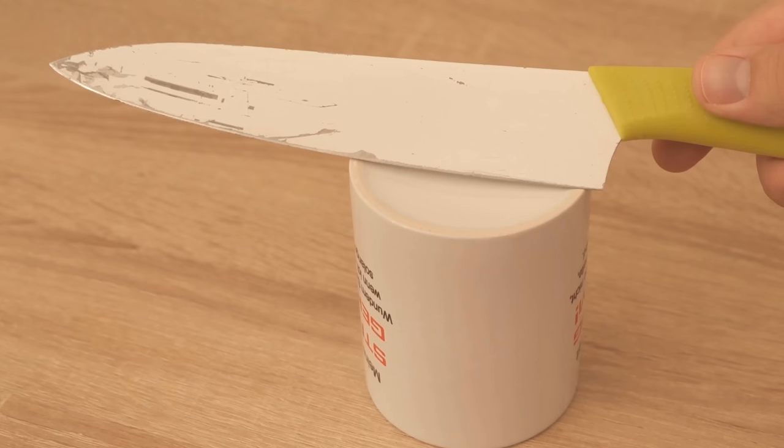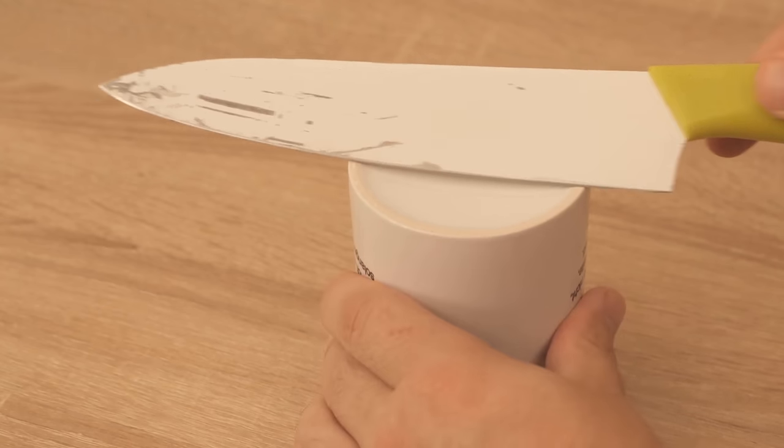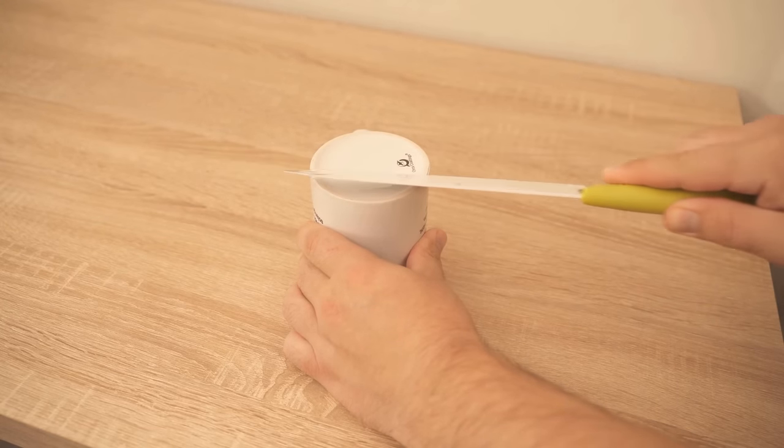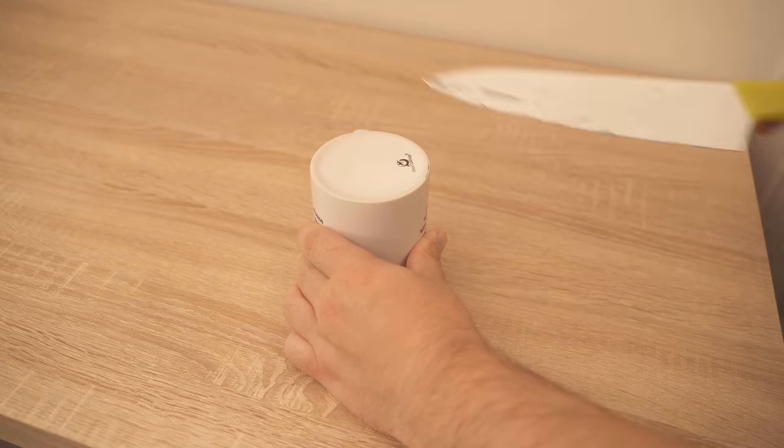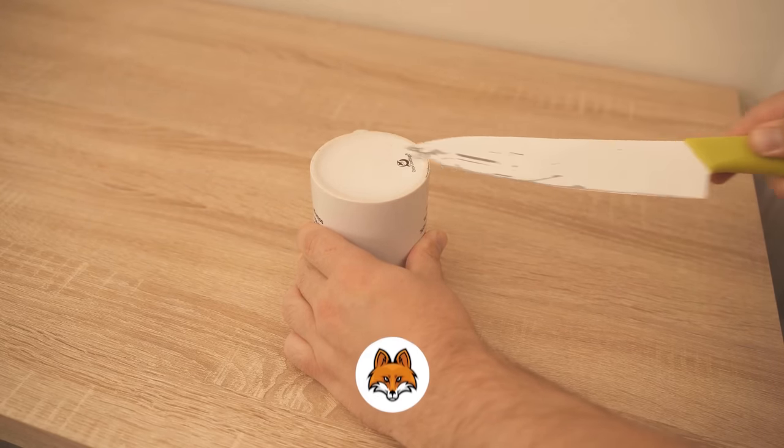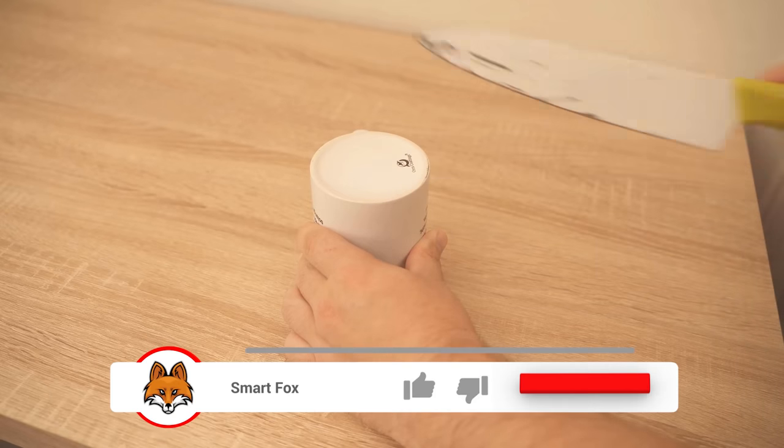Now you should hold the knife at a 20-degree angle to this edge and then pull it over. Do this alternately with both sides of the knife. When you have pulled your knife over the cup like this for some time, you will notice that it becomes sharper and sharper.